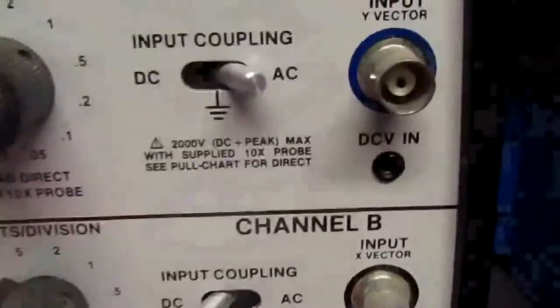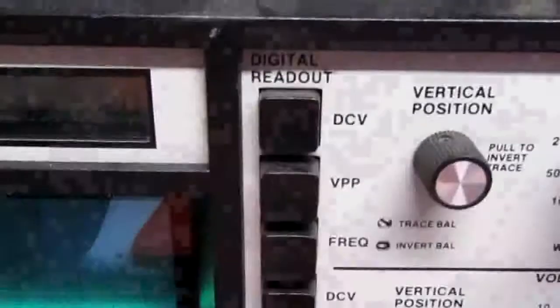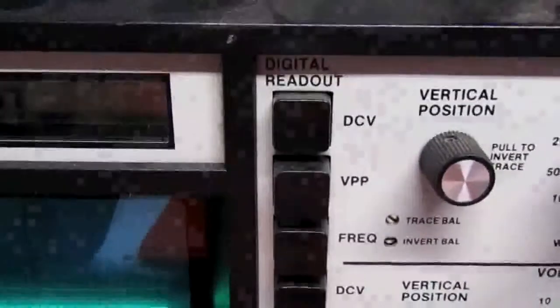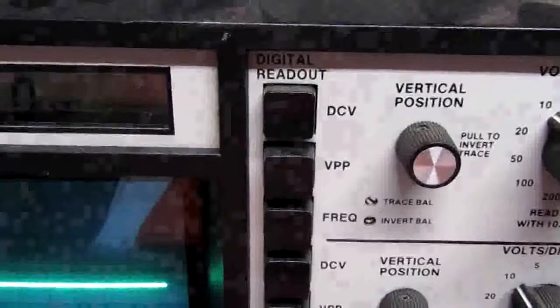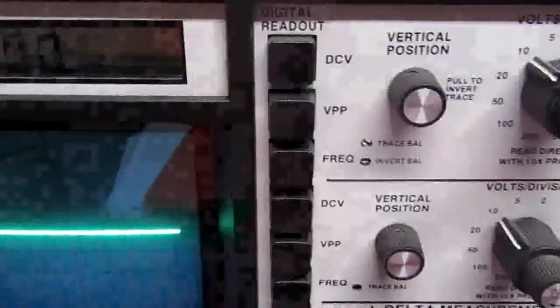the Sencore comes with this nice little DC input voltage. And over here on each channel, you can select the digital readout for DC volts. But I did not have the Sencore probe. So I go back on eBay. Cannot find any.